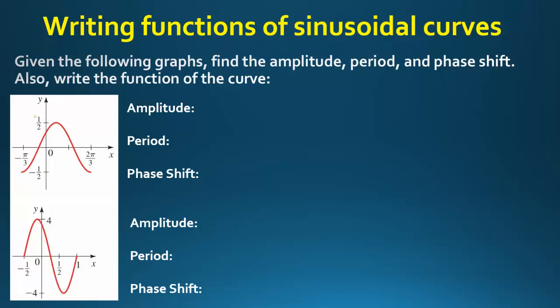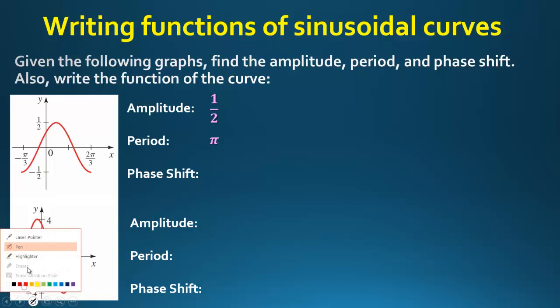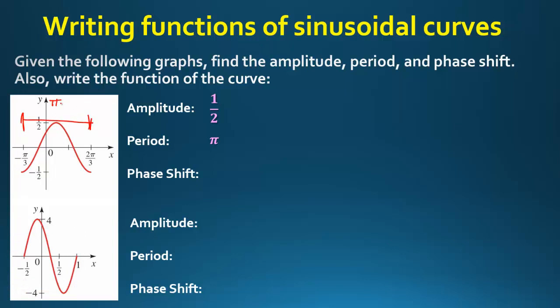Looking at the first graph: the amplitude is ½ since the curve only reaches ½. The period goes from –π/3 to 2π/3, so the period is π. Since cosine normally starts at the top but this graph starts shifted, we've moved it left π/3 — giving a phase shift of negative π/3.